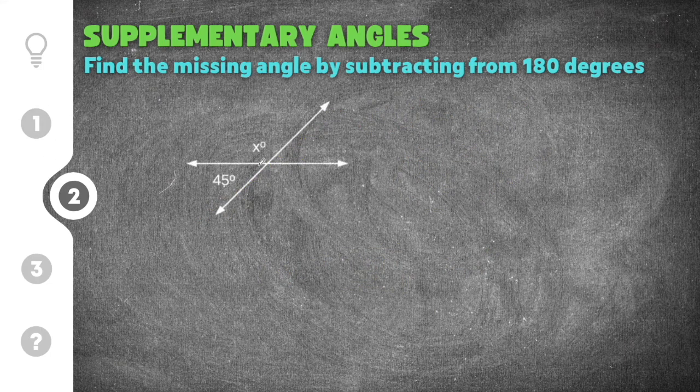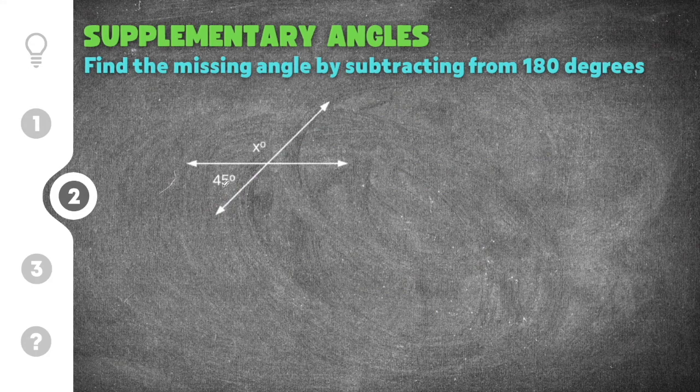Moving on to the second practice problem. This time we have 45 degrees and the angle we don't know is here. It's x.